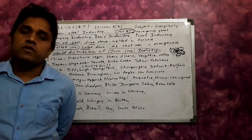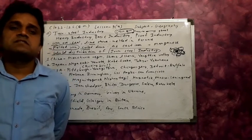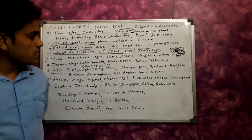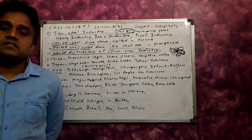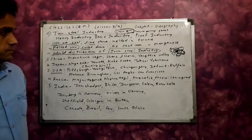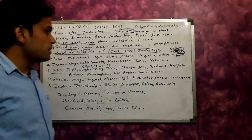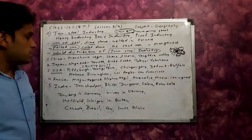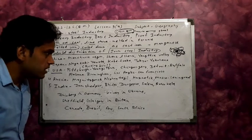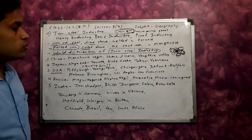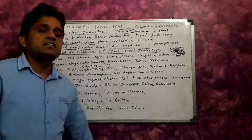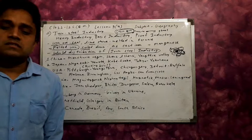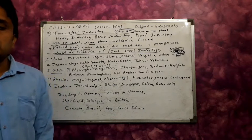Other important iron and steel regions of the USA include the Chicago Valley region, the Detroit-Buffalo region, the Alabama-Birmingham region, and the western part of the USA including Los Angeles and San Francisco, where iron and steel industry is also established.